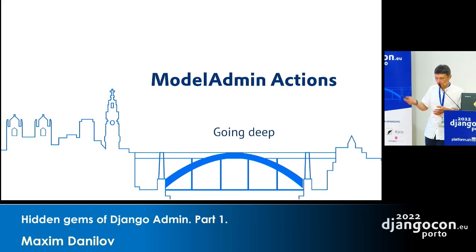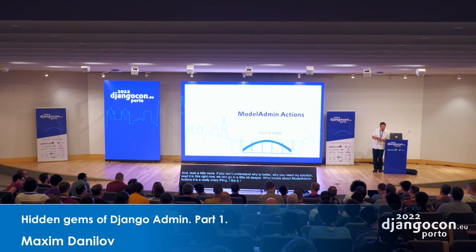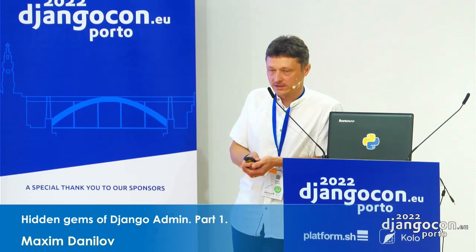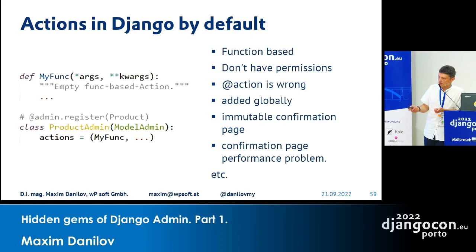Model admin actions — who knows about them? Model admin actions is a really crazy, perfect thing in model admin. By default, an action in Django is a function declared in the action attribute of model admin. This is obviously function-based. We don't have proper permissions, the admin decorator is completely wrong, some functions are added globally, the confirmation page is immutable, and the confirmation page has a really huge performance problem.